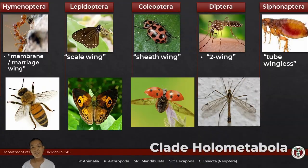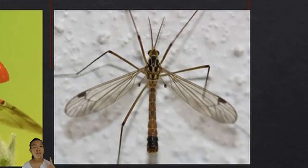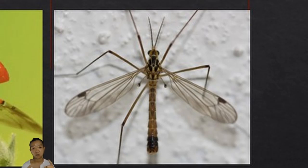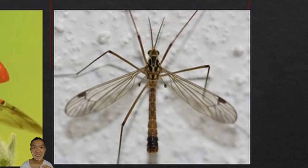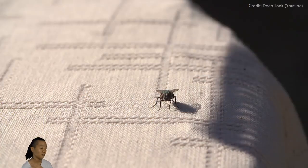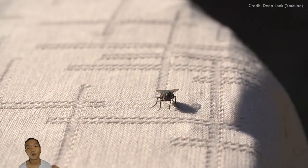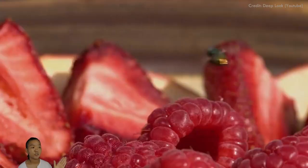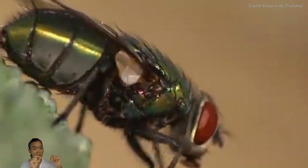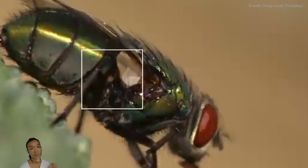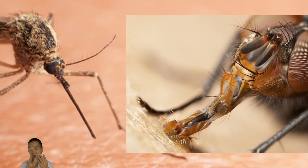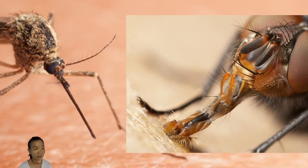Diptera — flies and mosquitoes — means 'two wings,' but it doesn't mean they only have two wings. Their hind wings are modified into structures called halteres. This is one of the reasons it's so hard to swat mosquitoes and flies — they can quickly adjust their direction mid-flight thanks to the halteres, which sense their orientation during flight. Their mouth parts are haustellate, though this doesn't necessarily mean just piercing-sucking like mosquitoes. Flies have lapping-sucking mouth parts.